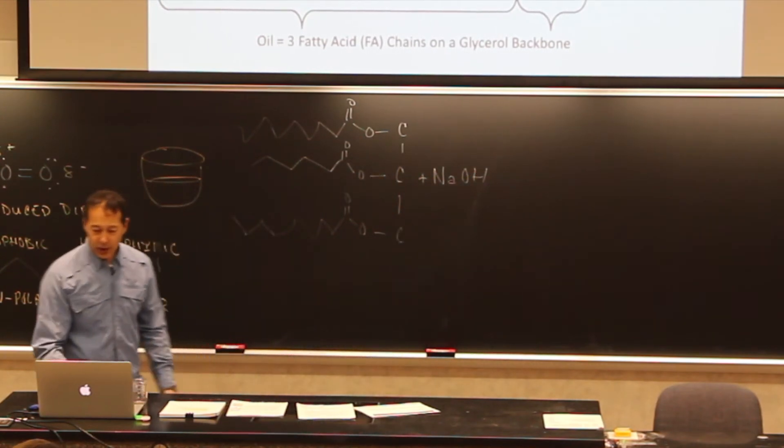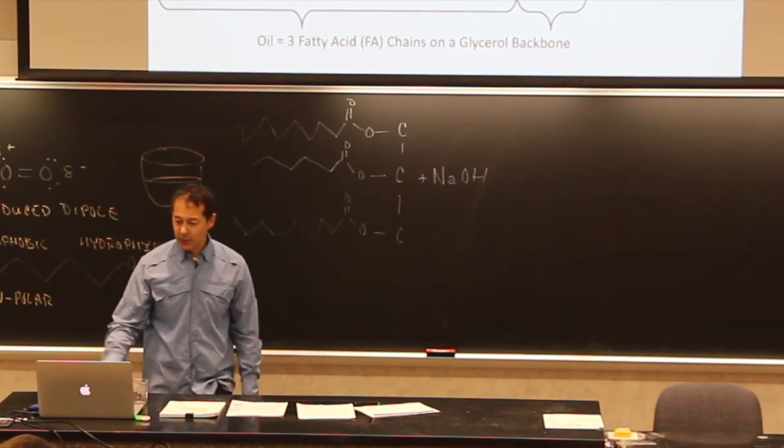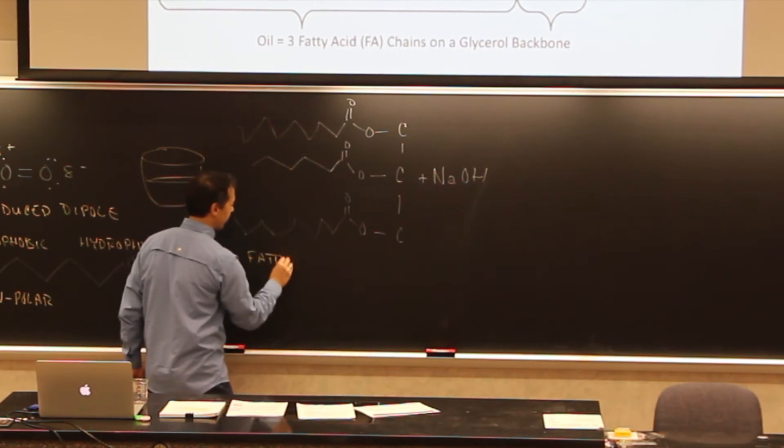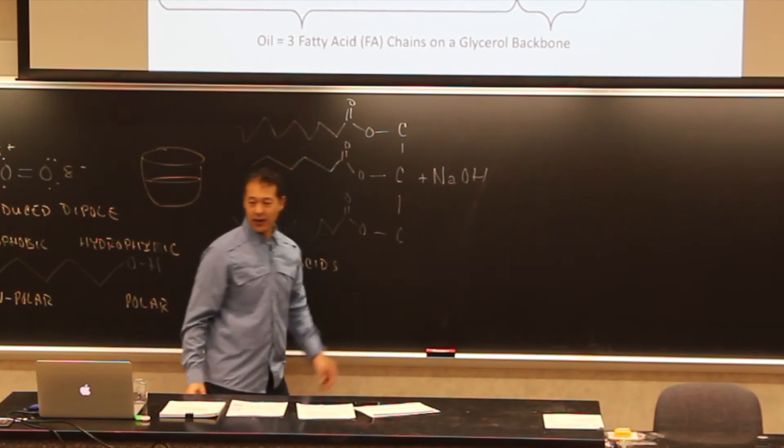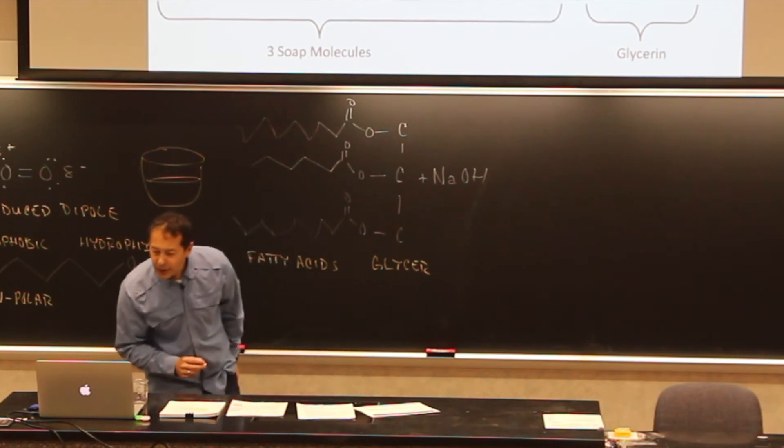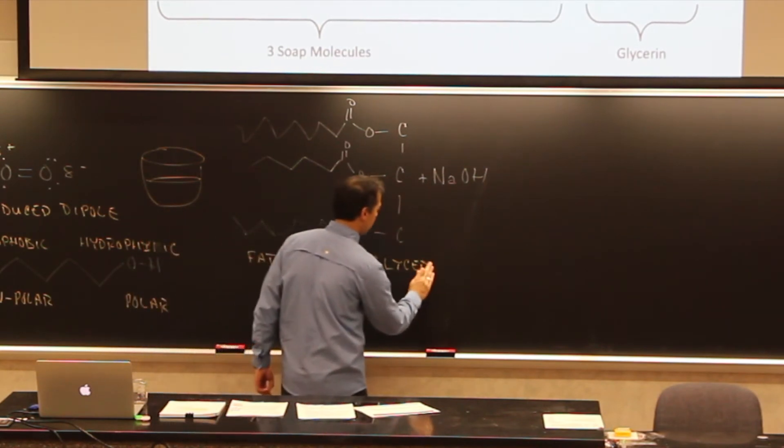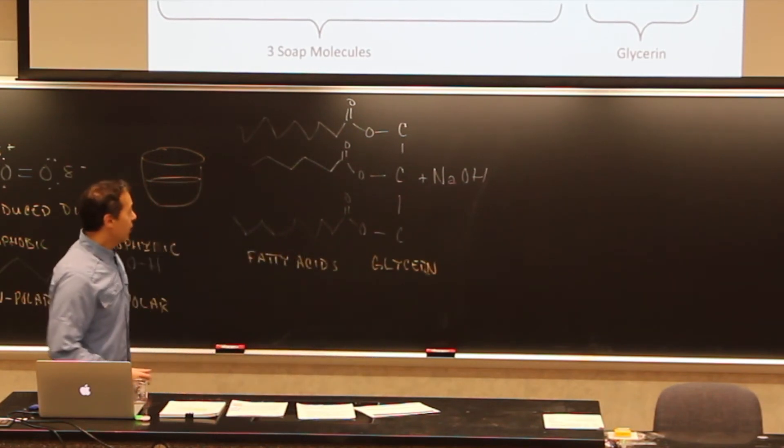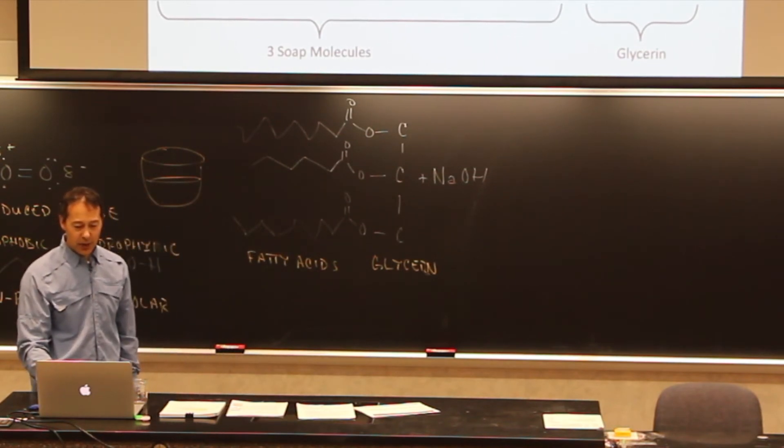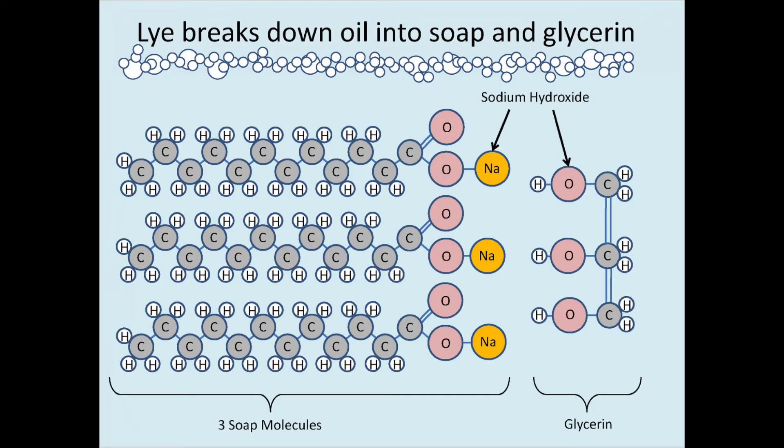And then what we do is you add a strong base to it, such as sodium hydroxide, like that. And when you do that, it's going to break this molecule apart. We have some names for this here. We have these chains here, these are called fatty acids. And this backbone here has a special name. It's called glycerin. And so when these interact with each other, they break apart, as you can see here in the slide, into these fatty acid soap molecules here on the left, and then glycerin on the right.